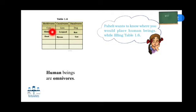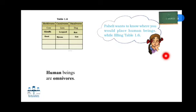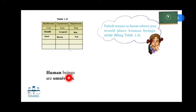Cow is a herbivore animal. Giraffe is a herbivore animal. Goat is a herbivore animal. I have given some examples — based on this, get help from your elder and fill it in your textbook. Pehli got a doubt whether a human being is an omnivore, carnivore, or herbivore. Yes, human beings are omnivores because they eat both plant and animal product food.